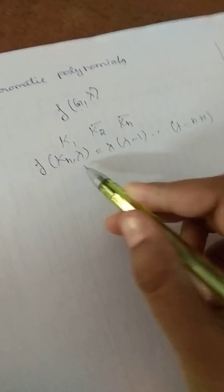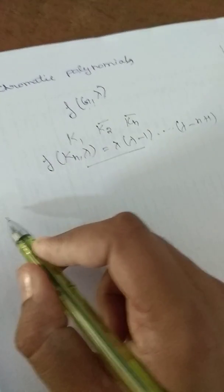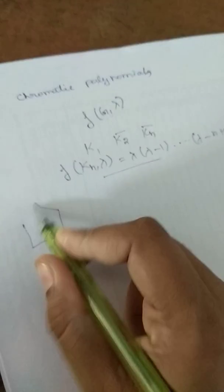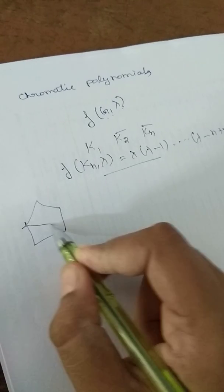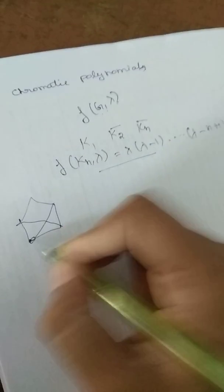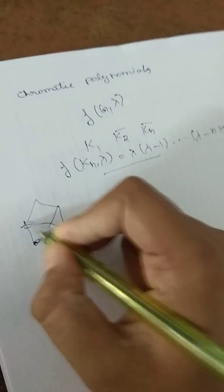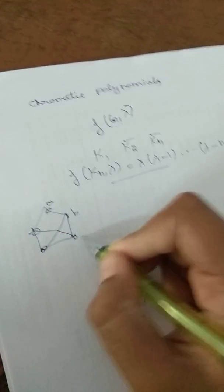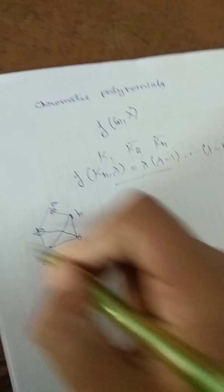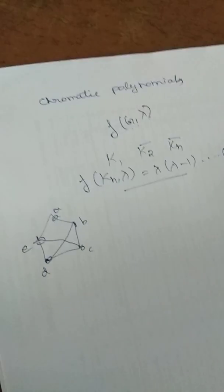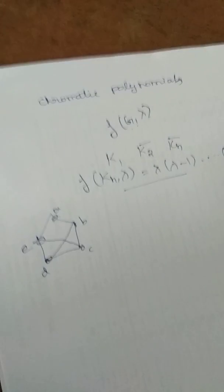This is a procedure for chromatic polynomial. We are looking at the graph — let's go through the initial graph. Here we go. There are five vertices. There is one graph. Vertices are A, B, C, D. There are a total of seven edges.